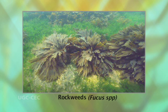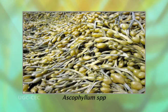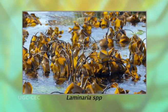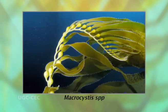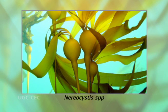Examples of these include the rockweeds, that is Fucus species and Ascophyllum species. The kelps, which include Laminaria species and the giant kelps, for example Macrocystis species and Nereocystis species. The giant kelps are by far the largest of the algae, achieving a length as great as 328 feet.